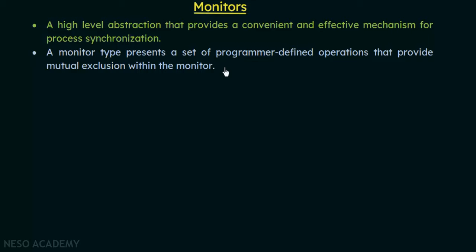In the case of semaphores, the process has to be designed so that it follows the rules — executing the wait operation when entering the critical section and the signal operation when leaving. If even one process is not designed carefully and the wait and signal operations are not defined properly, it could lead to deadlocks or timing issues for the entire system.